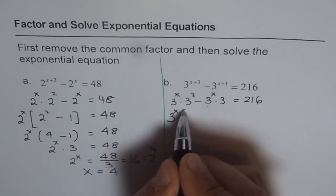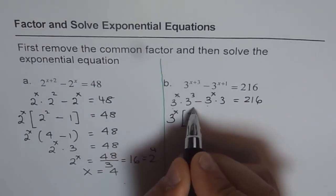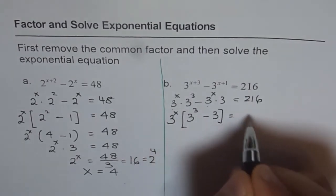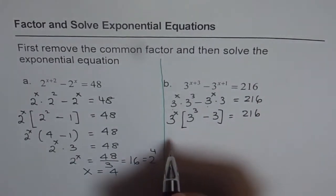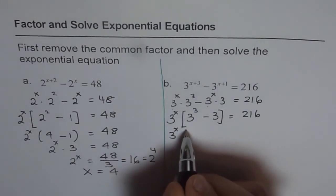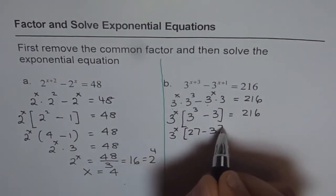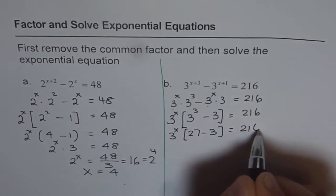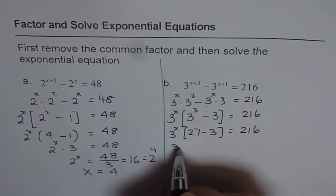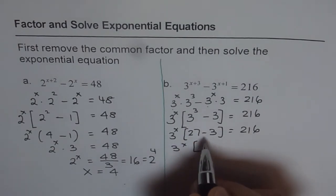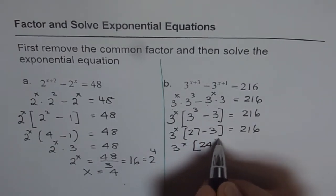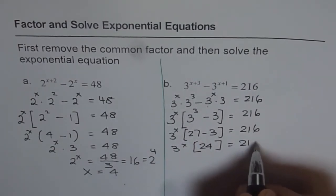So 3 to the power of x is common, and we are left with 3 cubed minus 3 equals to 216. So we have 3 to the power of x. 3 cubed is 27 minus 3 equals to 216. 27 minus 3 is 24, which equals 216.